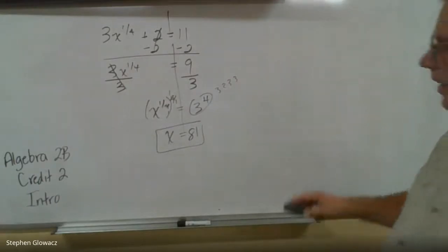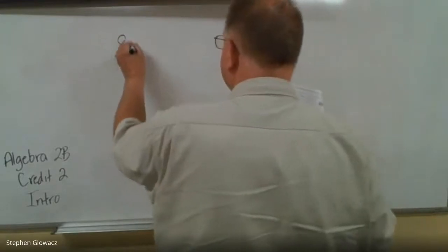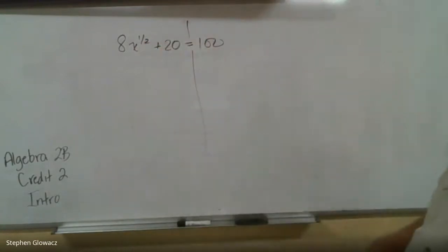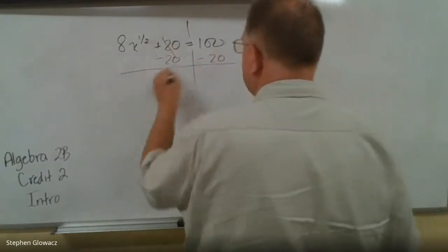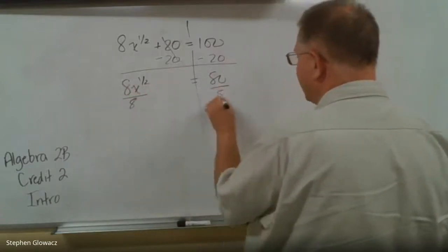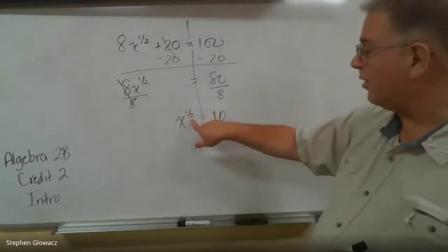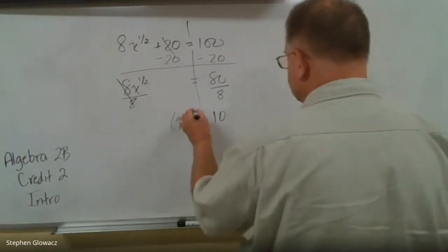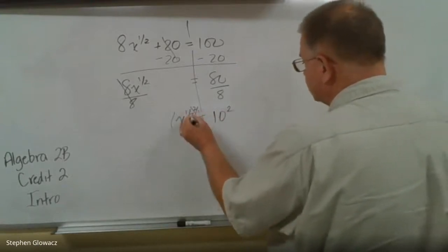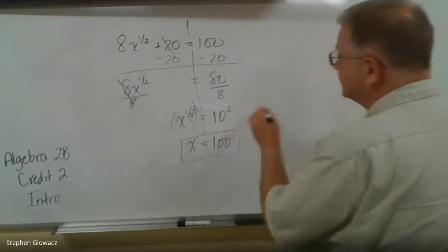Number 8: 8x to the 1 half plus 20 equals 100. Subtract 20 from both sides: 8x to the 1 half equals 80. Divide by 8: x to the 1 half equals 10. Raise both sides to the reciprocal power — the reciprocal of 1 over 2 is 2. A power raised to another power means you multiply, so the exponent cancels to 1, giving x to the 1st. 10 squared is 10 times 10, which is 100. So x equals 100.